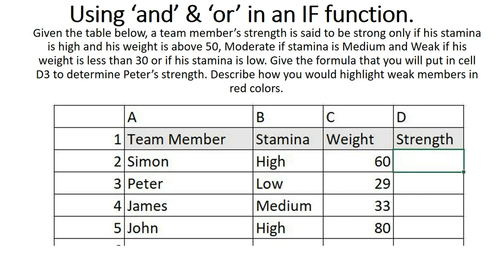This is our table and these are the team members: Simon, Peter, James and John. Stamina is high, low, medium and high respectively. The weight is 60, 29 kg, 33 and 80. That's the strength column being described — that's where the formula should be put.